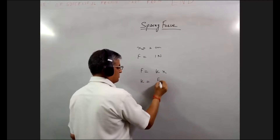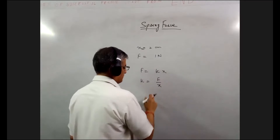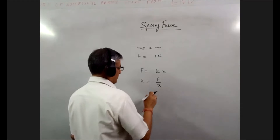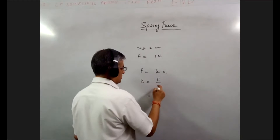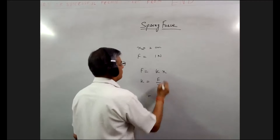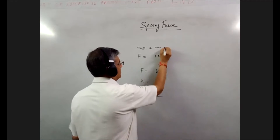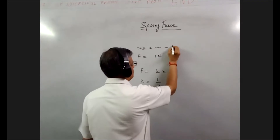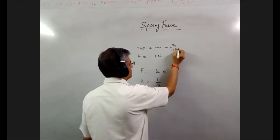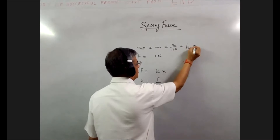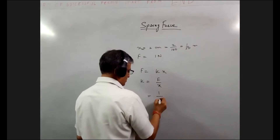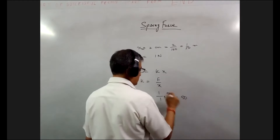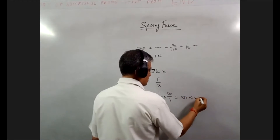K is equal to F upon x. F is 1 Newton. The displacement is 2 centimeters, which is 2 upon 100, that is 1 upon 50 meters. So K equals 1 divided by (1/50), which gives 50 upon 1, that is 50 Newton per meter.